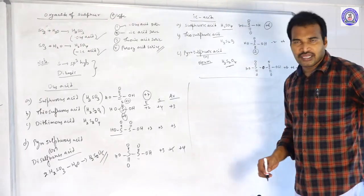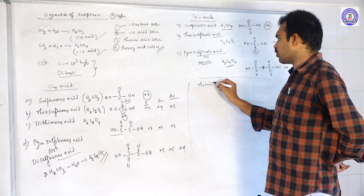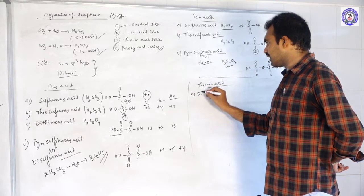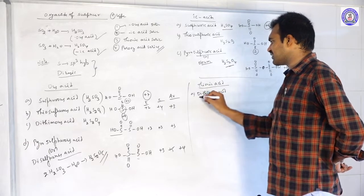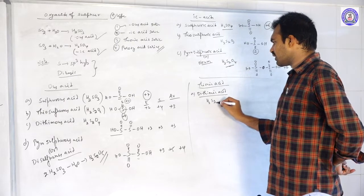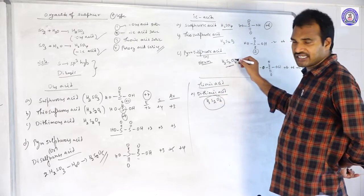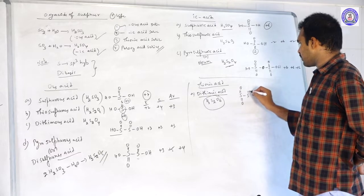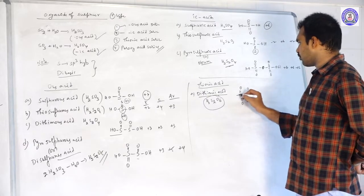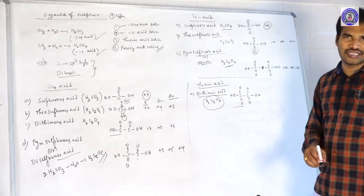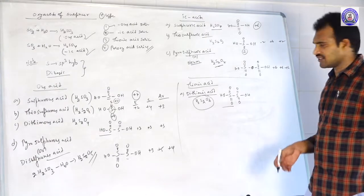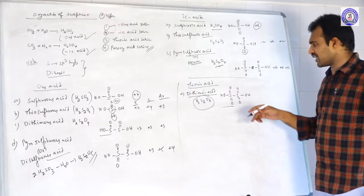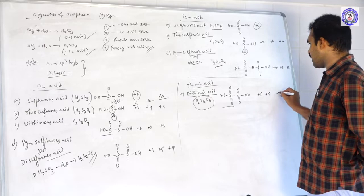Thionic acid series has two acids. First: Dithionic acid (H2S2O6). Structure: HO−S(=O)(=O)−S(=O)(=O)−OH. It is a combination of two thionic acid units. Each sulfur is connected by a single S−S bond. The oxidation state of each sulfur is +5; average is also +5.